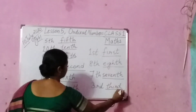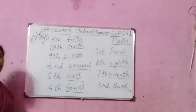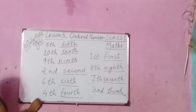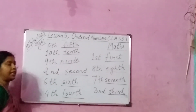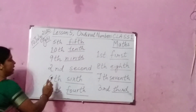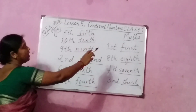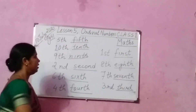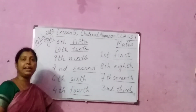So please listen, children. Once again I am repeating it. See 5th — the spelling: F-I-F-T-H. You write 5 like this, put a dash and write the spelling. Next one is 10th: T-E-N-T-H. Next one is 9th: N-I-N-T-H. Next one is 2nd: S-E-C-O-N-D. Next is 6th: S-I-X-T-H. Next one is 4th: F-O-U-R-T-H. Next one is 1st: F-I-R-S-T. After that is 8th: E-I-G-H-T-H. After that is 7th: S-E-V-E-N-T-H. And last one is 3rd: T-H-I-R-D.